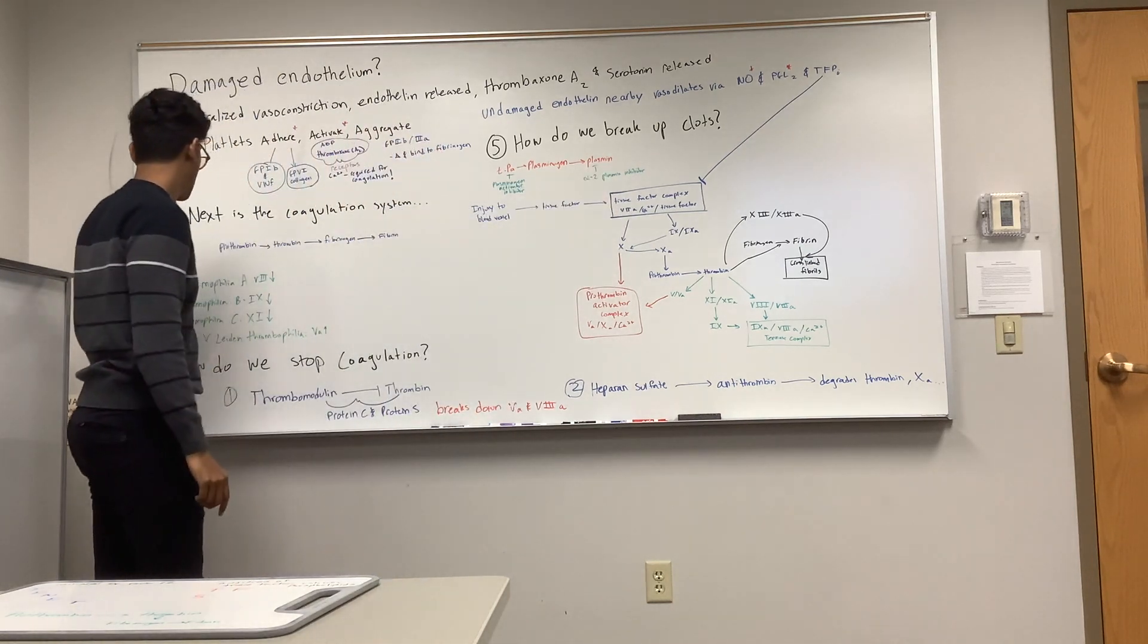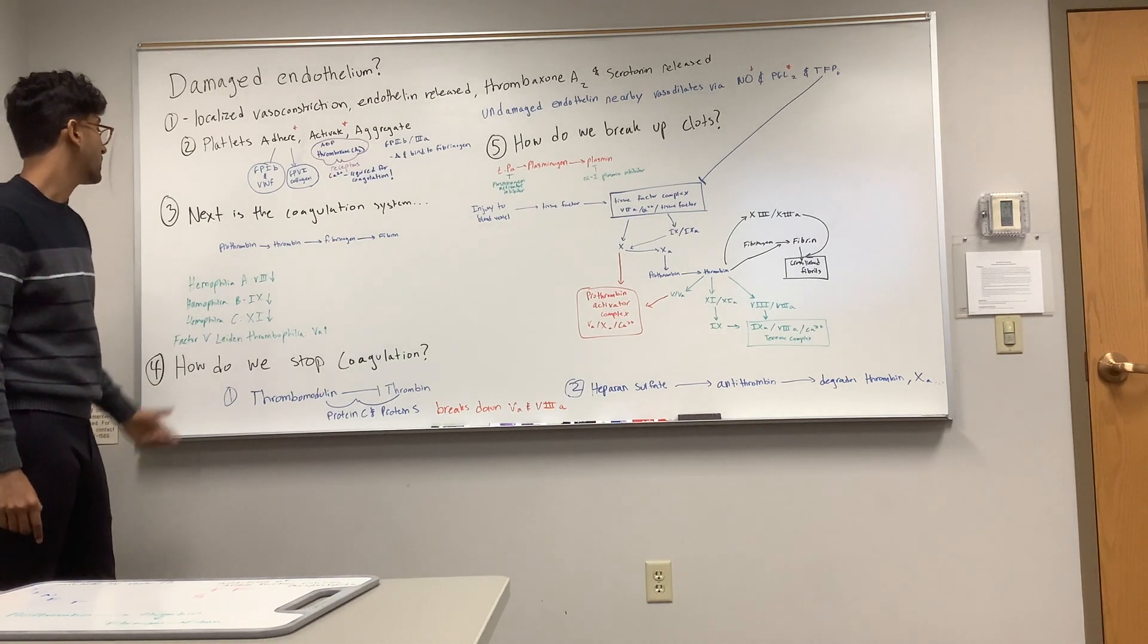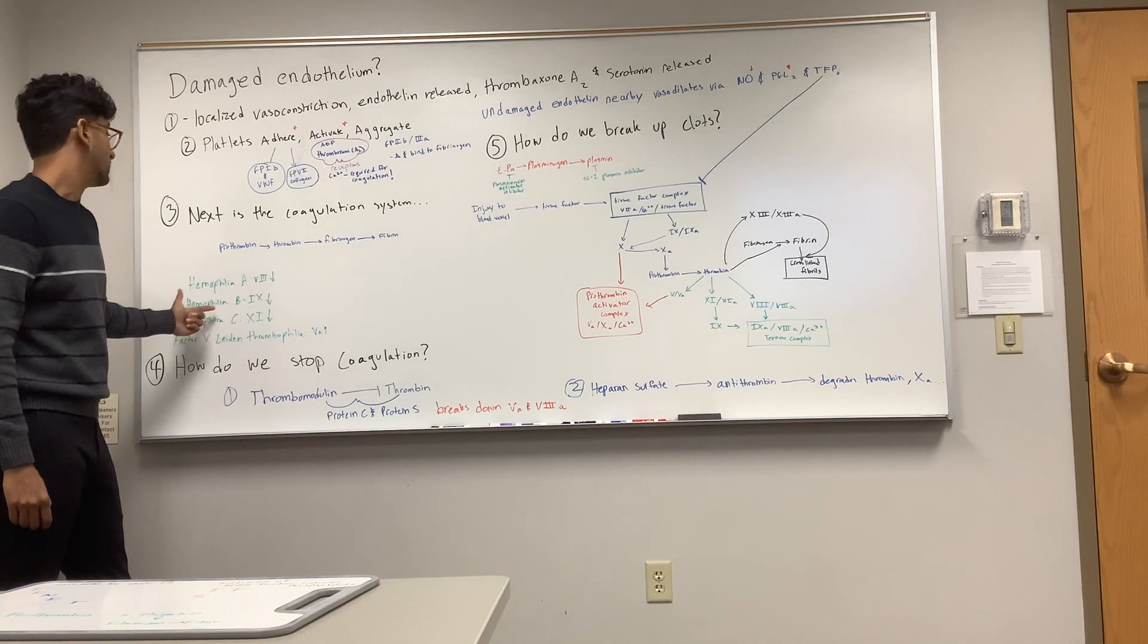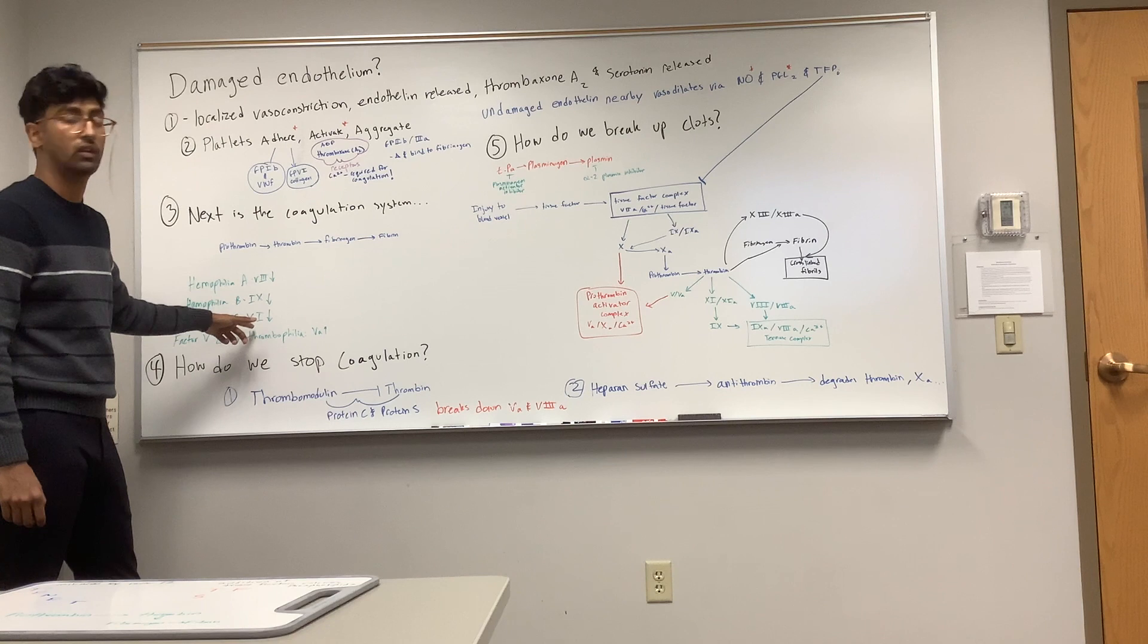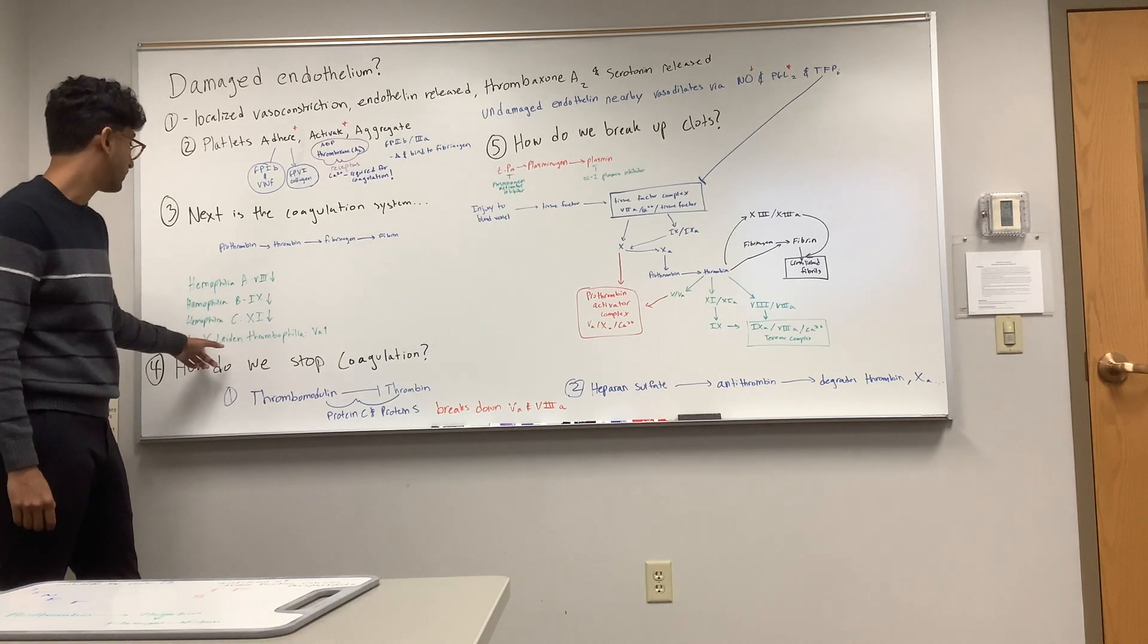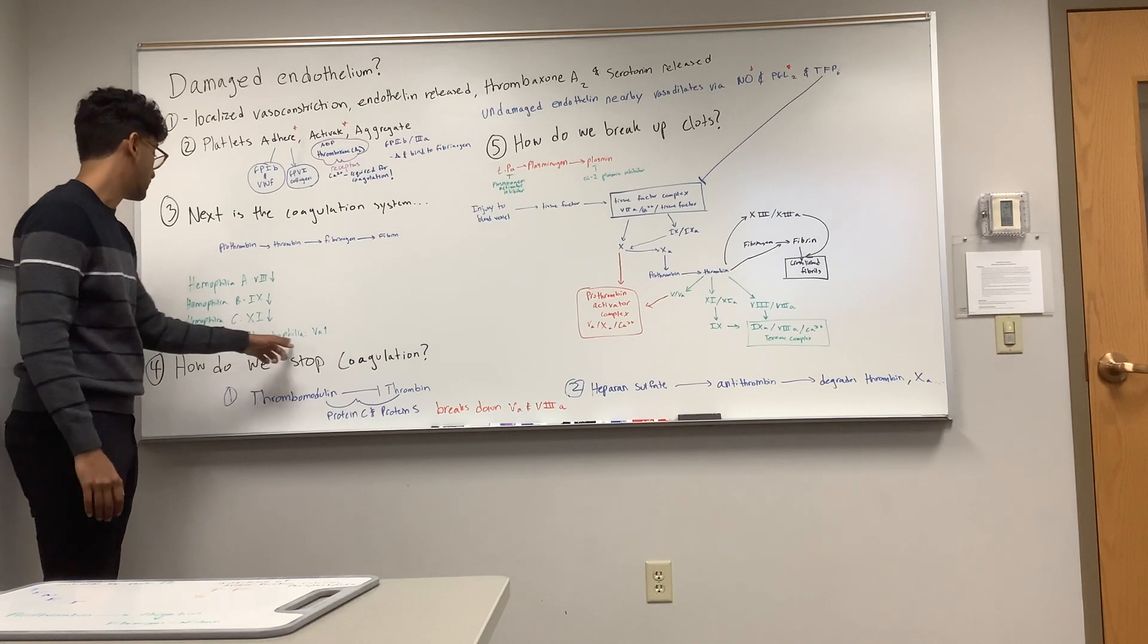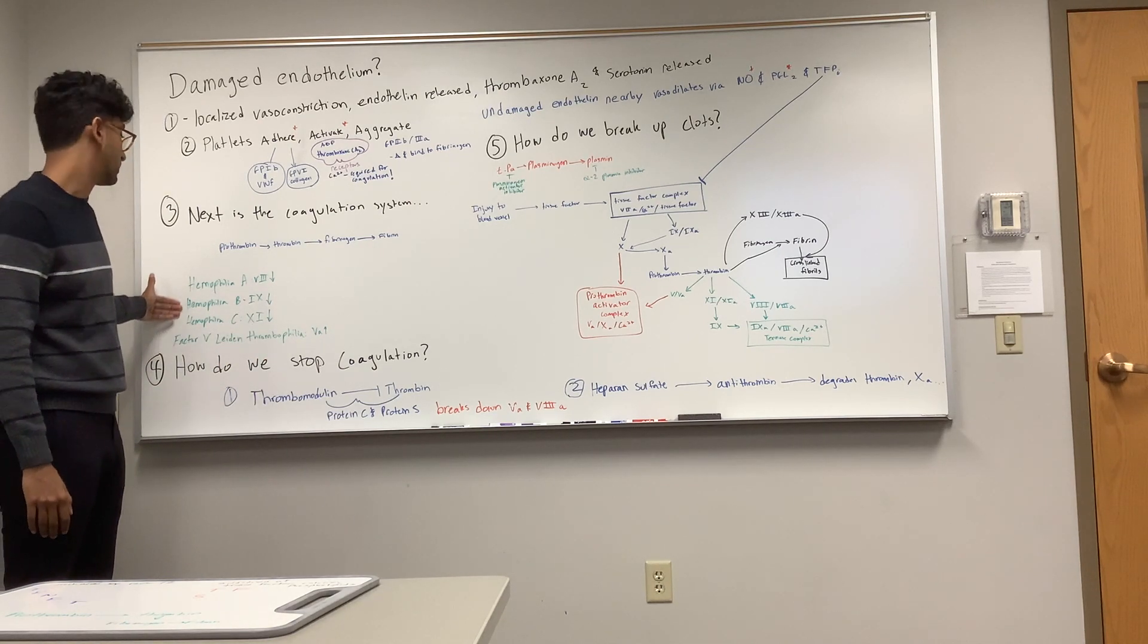A few disorders I want to go over are hemophilia A, B, and C. A and B are X-linked recessive. A is a reduction in factor 8, B is a reduction in factor 9, and C is a reduction in factor 11. Then we have factor V Leiden thrombophilia, which is an elevation of factor 5. For this one, we have too much clotting. For these three, we have too little clotting.